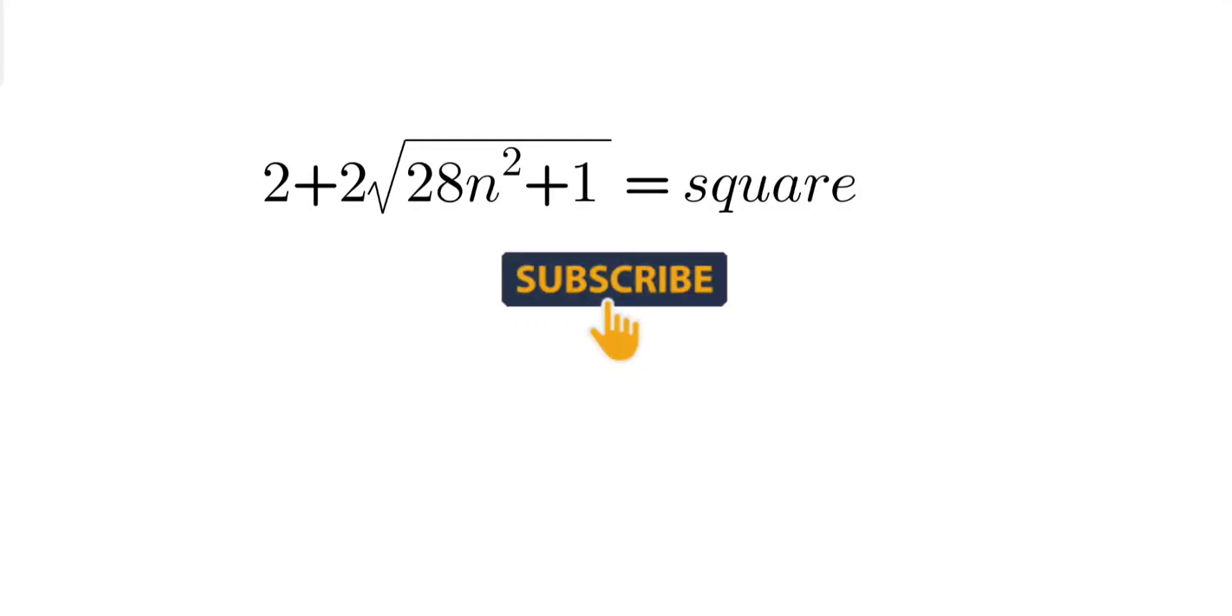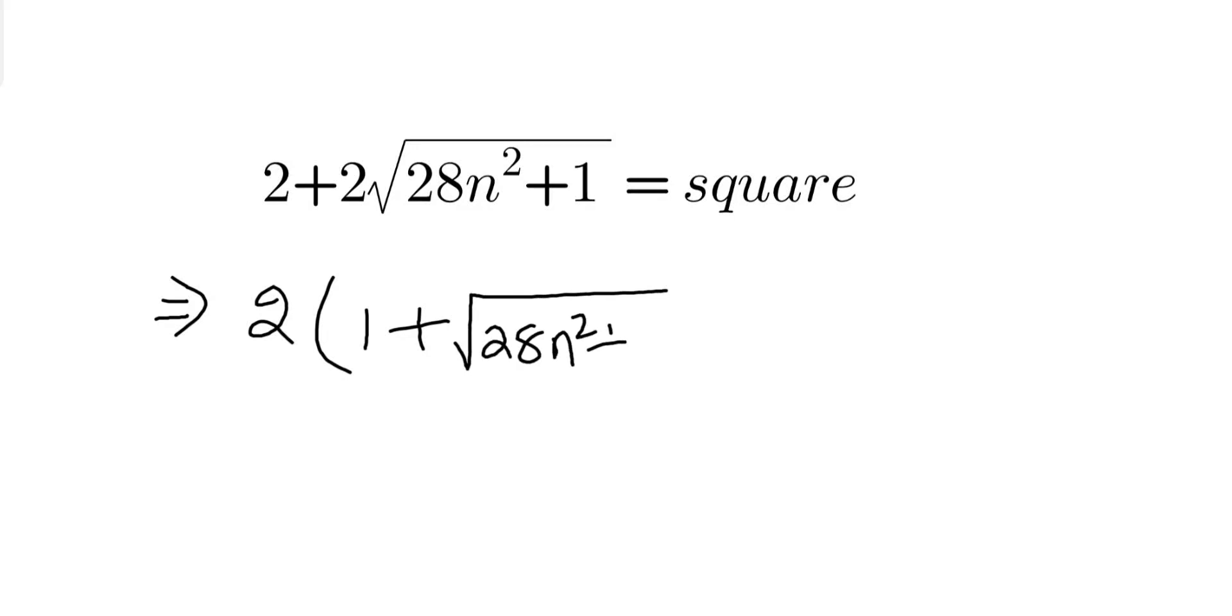As you see, left hand side if we take 2 as common it is even, so it means right hand side must be an even number. So say that number is 2k. Now cancelling 2 from both sides we have 1 + √(28n² + 1) = k.